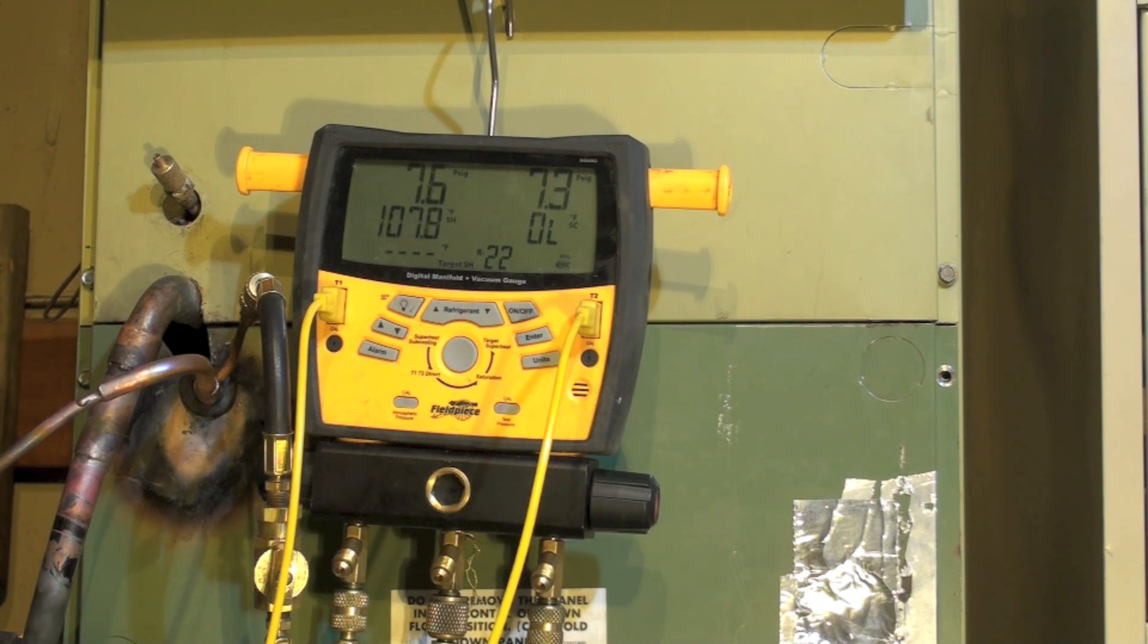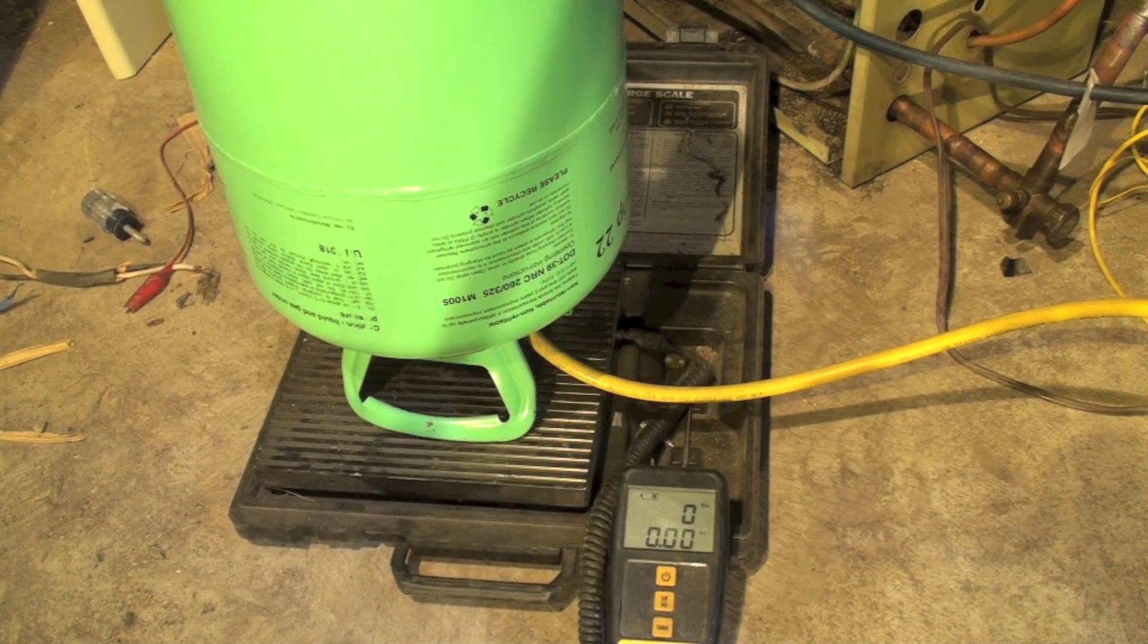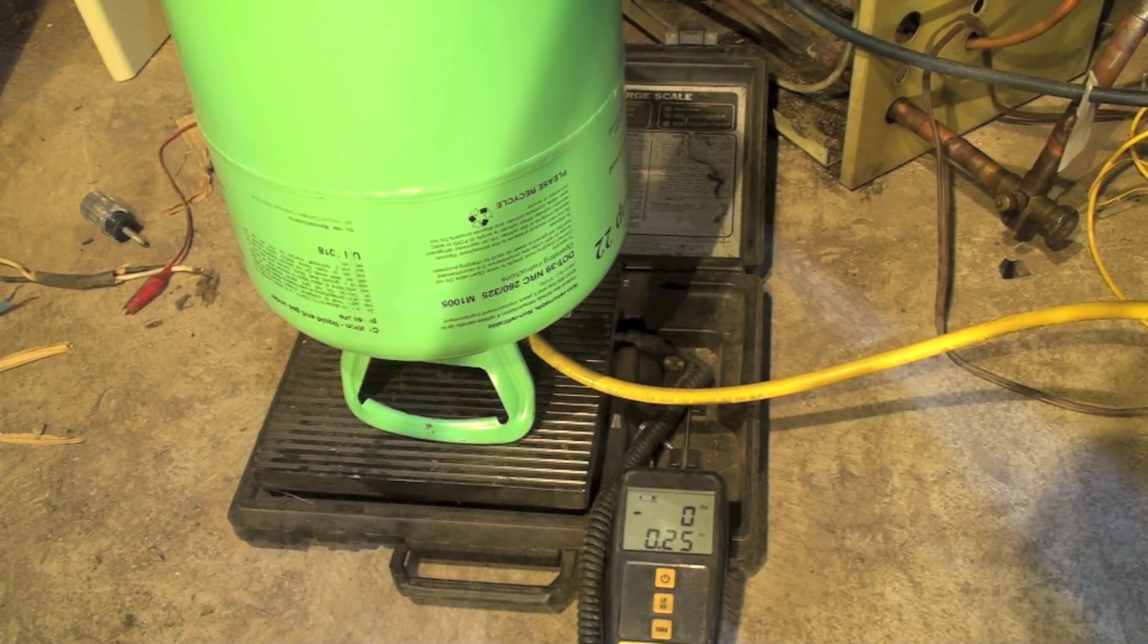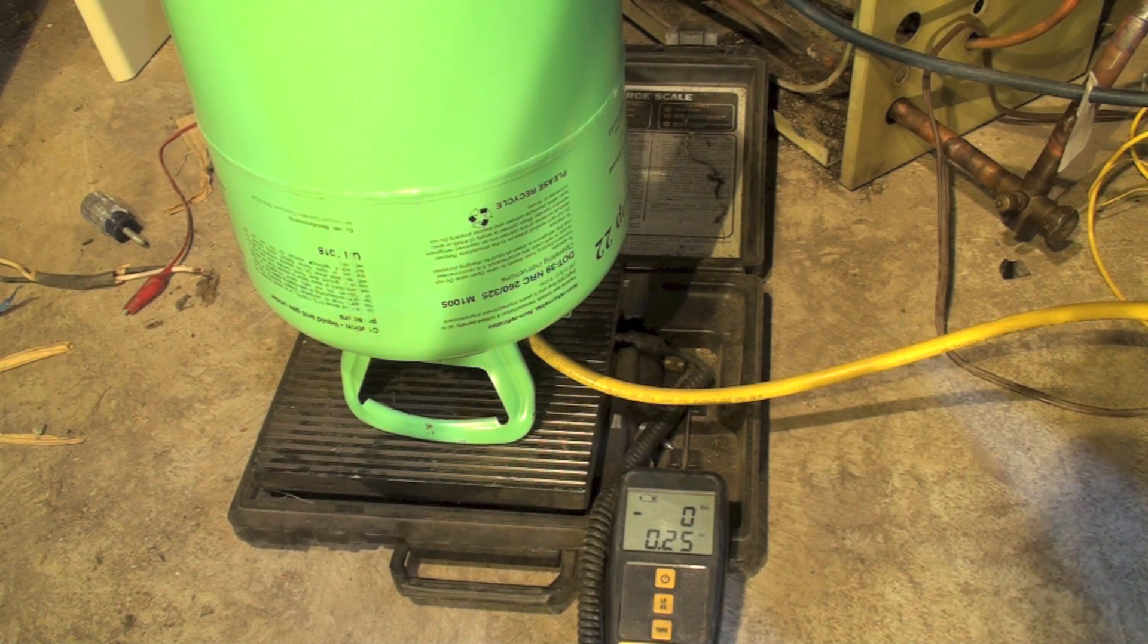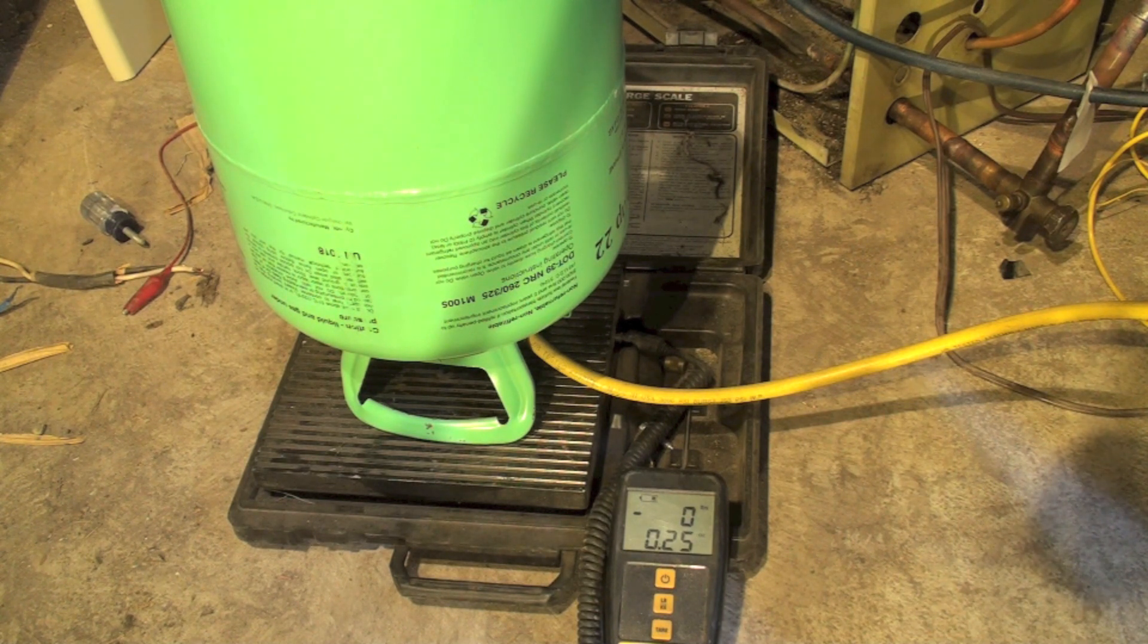Liquid can't go in the low side unless it's metered, but it can go in the high side. I'm going to show you where we're at with the cylinder. This is an R22 machine. If this was 410A or any other blend, it would have to go in liquid no matter what. We can do gas or liquid. We will start out with liquid.